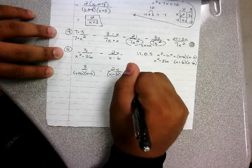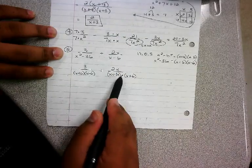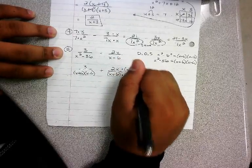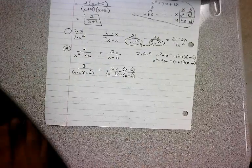Multiply by x plus 6. Now it looks the same, but whatever I do to the bottom I have to do it to the top, so the top gets x plus 6 as well.